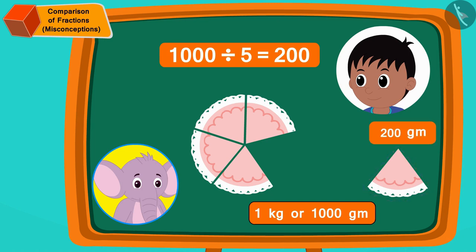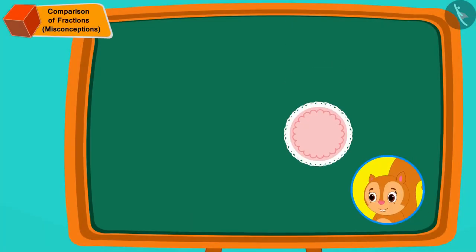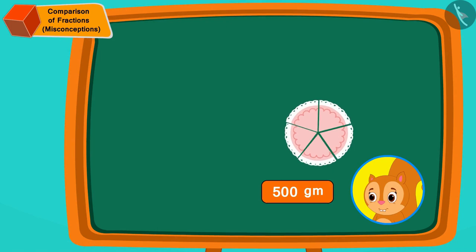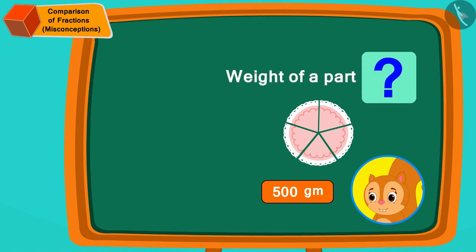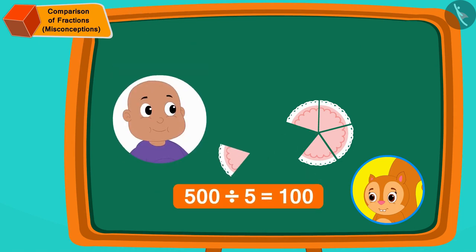Now Chanda's cake is five hundred grams. If we divide it into five equal parts, then how many grams is each part? Each part is five hundred divided by five, or one hundred grams. In this way, Babloo has got one part of Chanda's cake, or one hundred grams of cake.